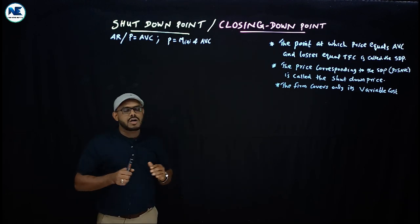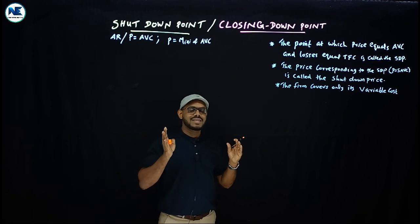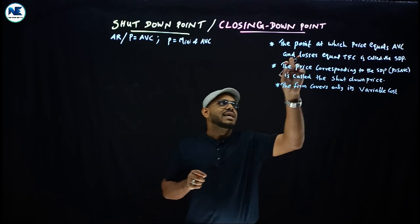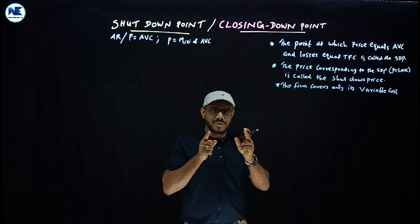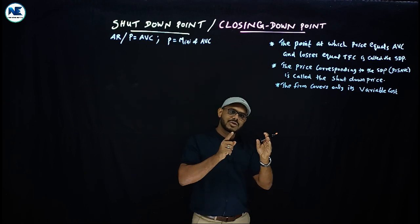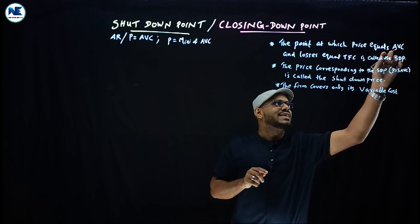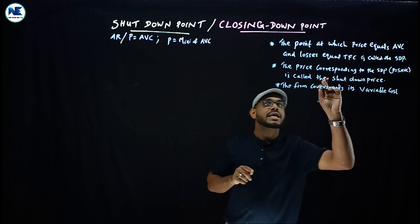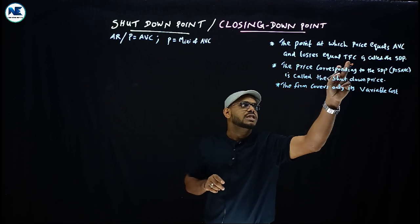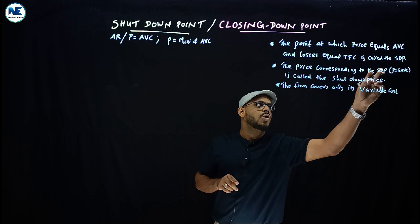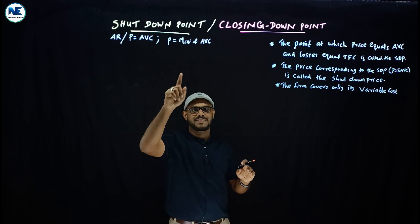So how can we define this concept in simple terms? The point at which price — that is average revenue — is equal to average variable cost (AVC), and losses are equal to total fixed cost, is called the shutdown point (SDP).